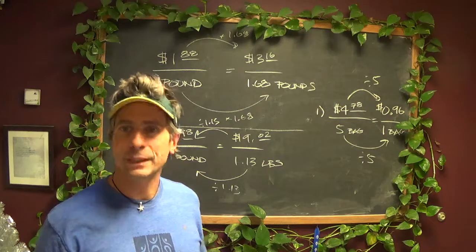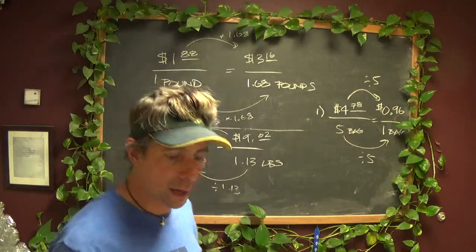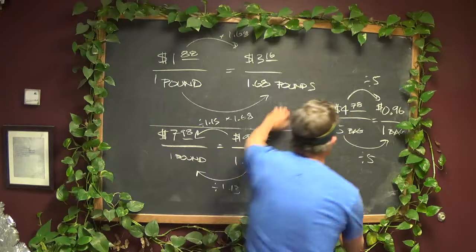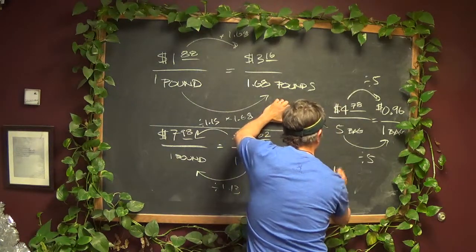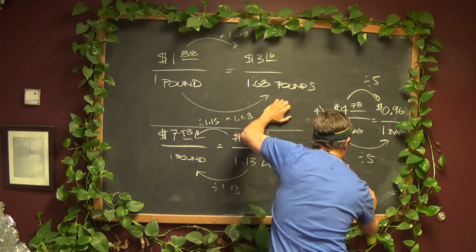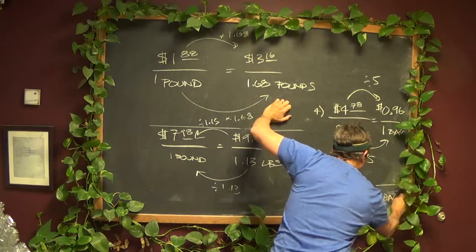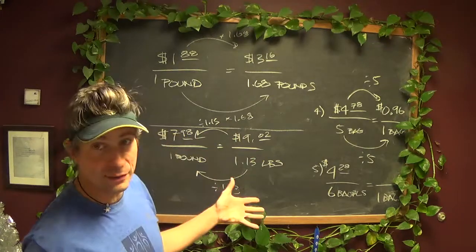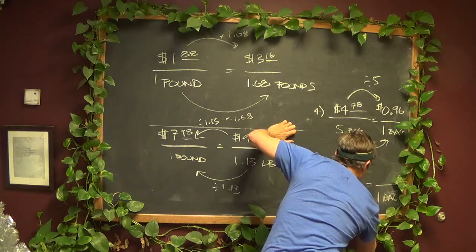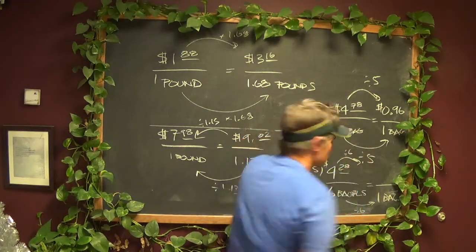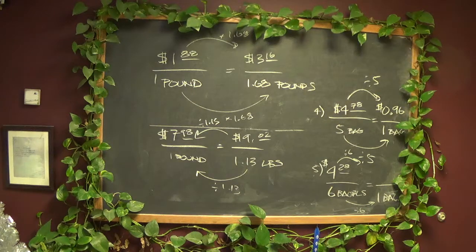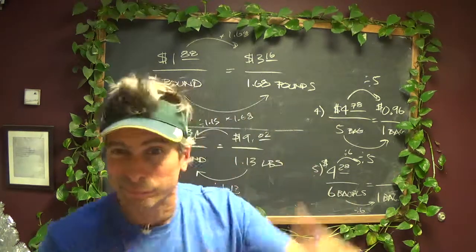Same thing for Franz. Franz was $4.28 for six bagels. So how much for one? Same exact idea as Dave's, except Franz gives you six bagels. So we have to divide this by six, which means you have to divide this by six. So $4.28 divided by six gives us 71.3 cents.